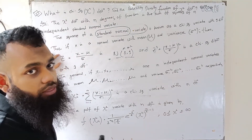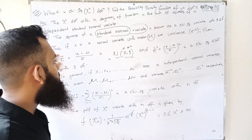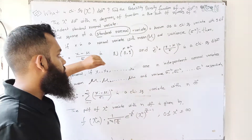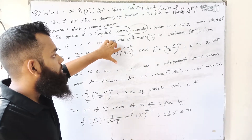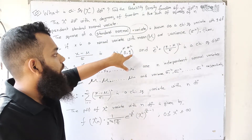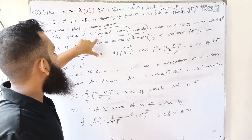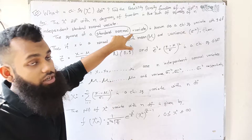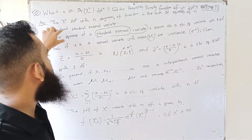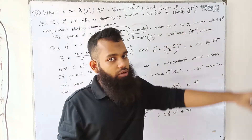Now, consider a normal distribution with mean mu and variance sigma squared. When mean is 0 and variance is 1, we have the standard normal variate. The standard normal variate squared gives a Chi-square variate with one degree of freedom.